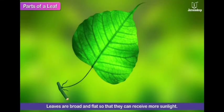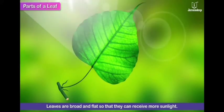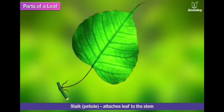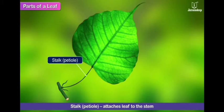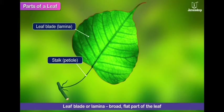Let us first study about leaf. Leaves are broad and flat so that they can receive more sunlight. There is a stalk or a petiole which joins the leaf to the main branch. It is a connection which connects the leaf to the main branch. And this flat part is called leaf blade or lamina.